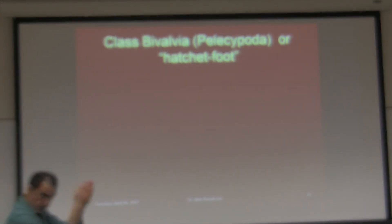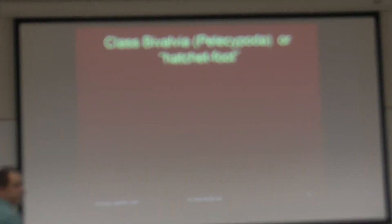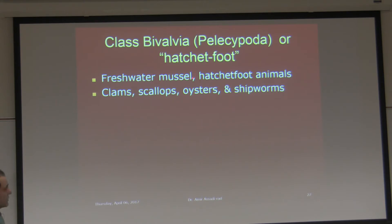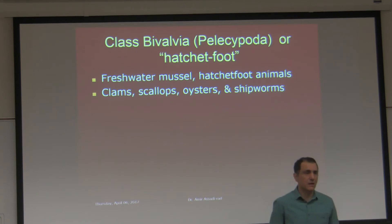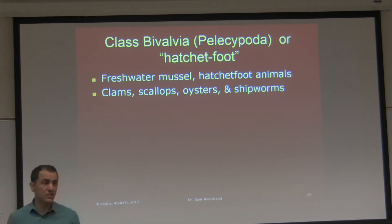Class Bivalvia — they have two shells. Pelecypoda is another name for that class, or 'hatchet foot' is the common name. Fresh water mussels, hatchet foot animals, clams, scallops, oysters, shipworms. When I say fresh water, it doesn't mean all members of this class are found in fresh water — there are many species found in the marine environment as well.